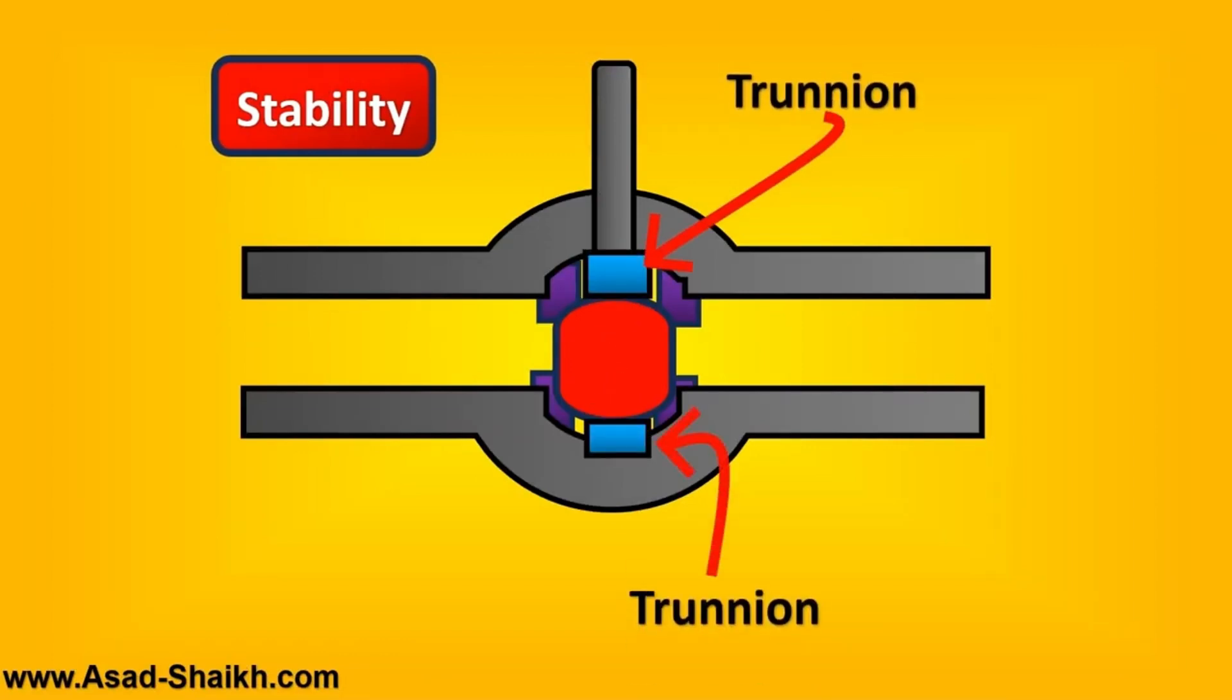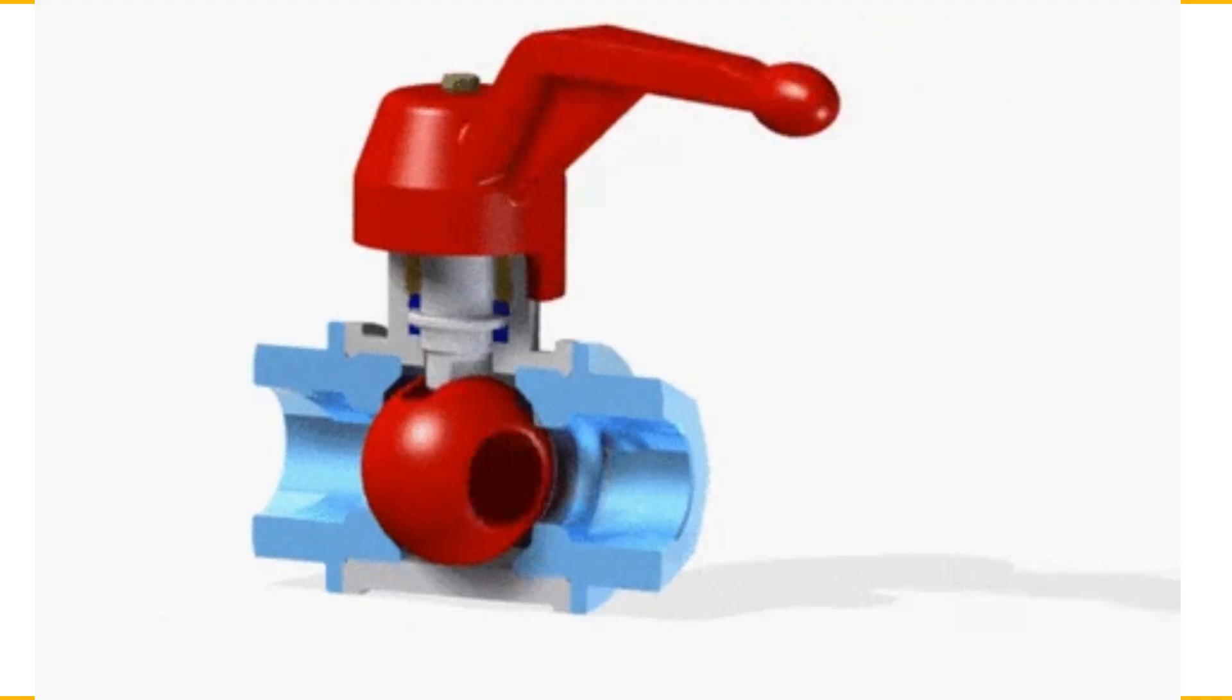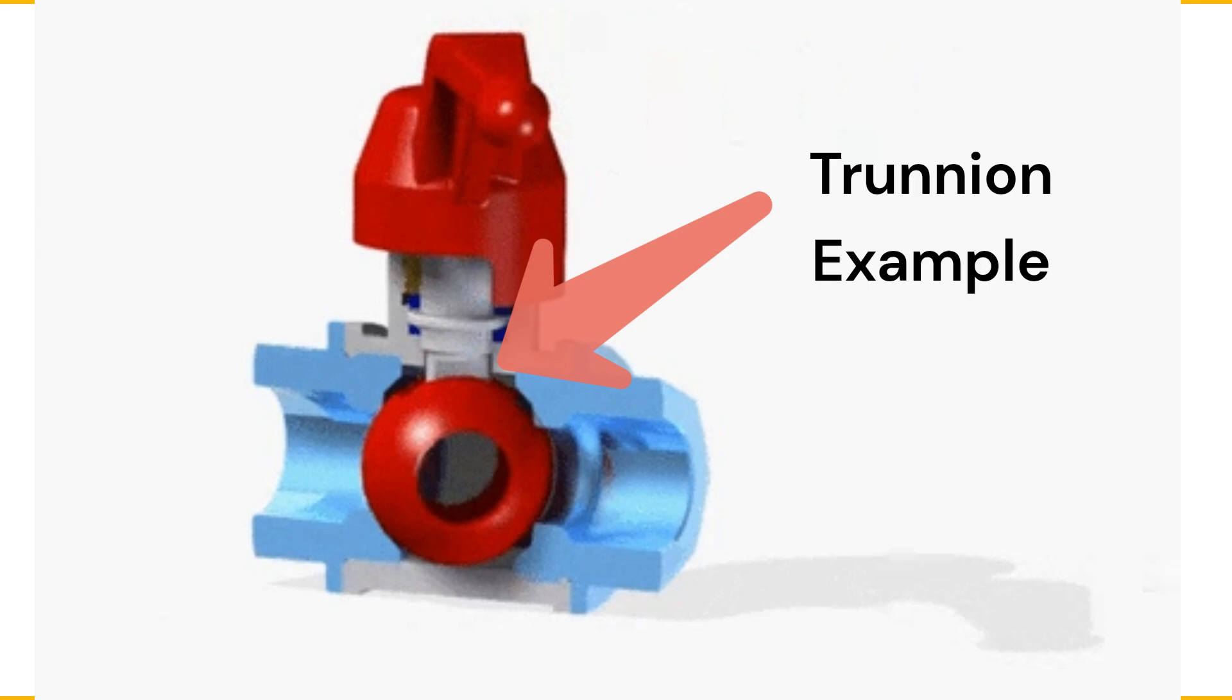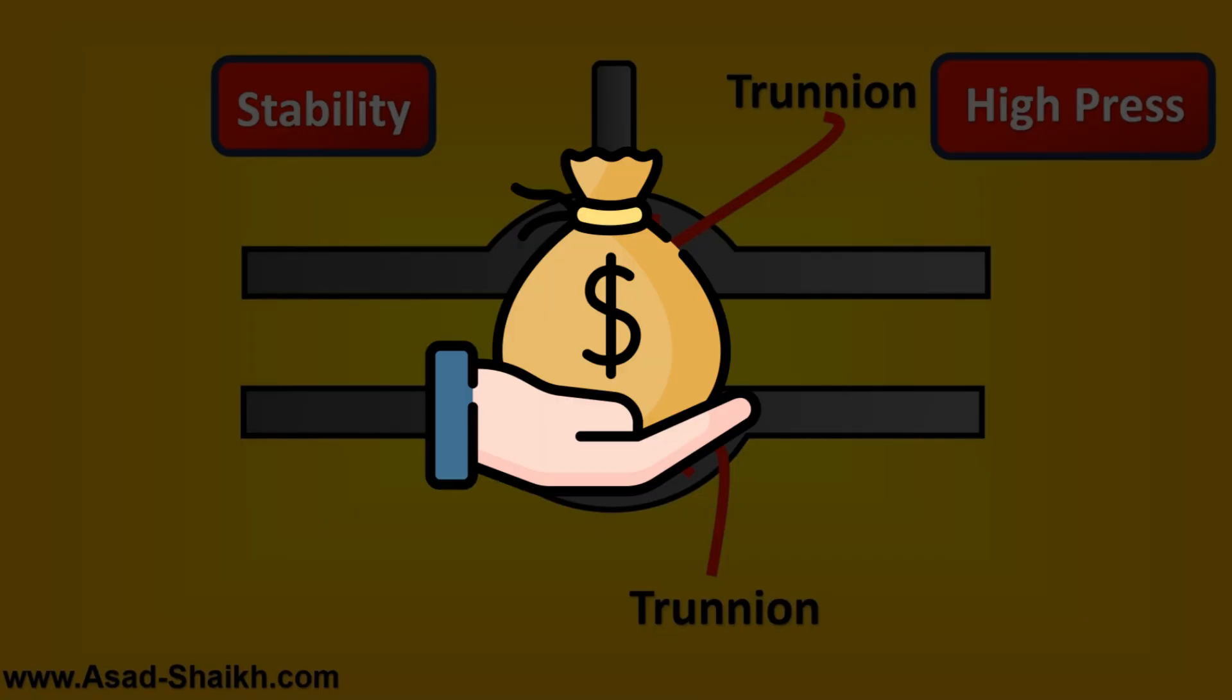This trunnion is basically going to support the valve such that in high pressure drop applications, the ball remains in its place. This is better as compared to floating ball valve when it comes to high pressure applications. However, the cost of a trunnion mounted ball valve is far superior as compared to a floating ball valve application.